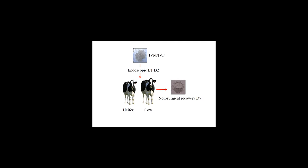We compared the ability of the oviduct and uterus of heifers and postpartum cows to support embryo development by transferring in vitro-produced embryos endoscopically into the oviduct on day 2 and recovering embryos on day 7. Only 34% of embryos were viable at recovery in heifers, while only 18% were viable in cows, indicating differences in the ability of the reproductive tract to support development. We repeated the experiment comparing non-lactating and lactating postpartum dairy cows: 50% of embryos were viable in non-lactating cows compared with only 31% in the lactating group, indicating that the environment induced by lactation results in suboptimal embryo development.